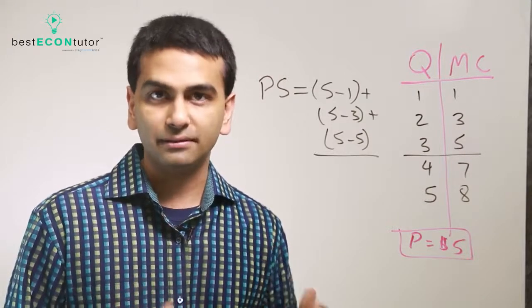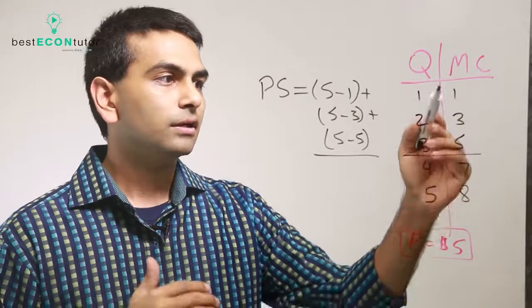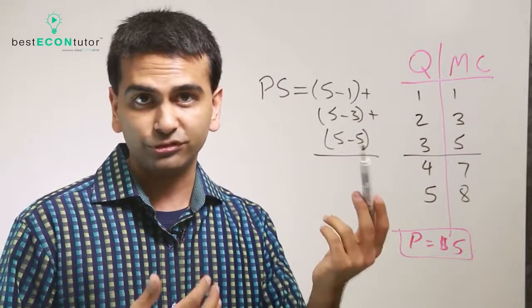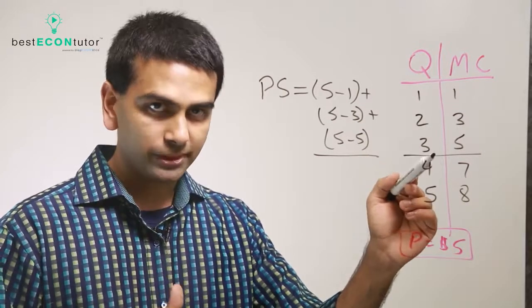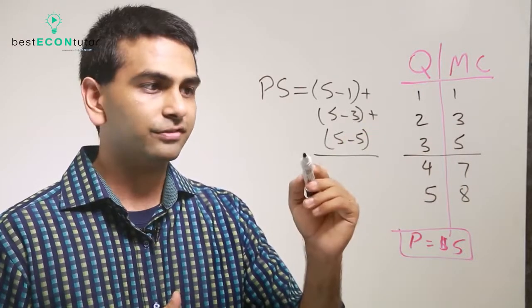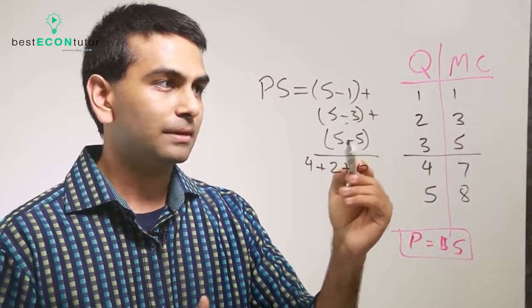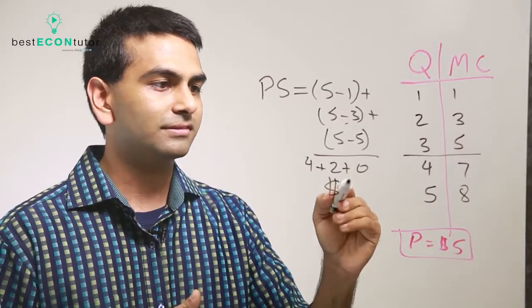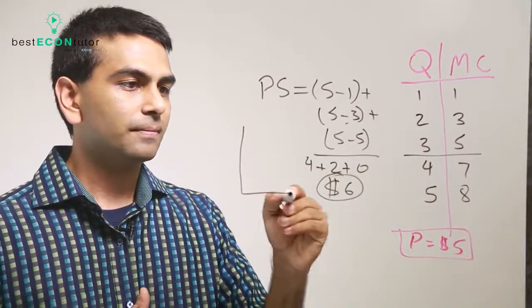Any rational profit-maximizing producer would stop producing at three. So if you're a producer in this market and you're being rational, you'd stop at three. Your producer surplus — kind of like profit — would be $4 for the first item, $2 for the second item, and $0 for the third item. Overall your producer surplus is $6.